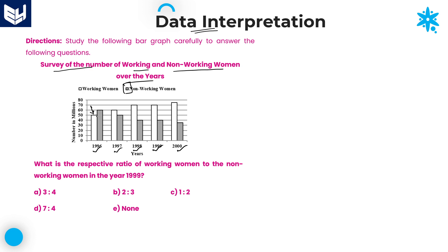If you observe carefully, the values are not provided but a scale is given. If the value is in between the scale, then we can consider it as the midpoint. For example, in the year 2000, working women is in between 70 and 80, so you can take it as 75. Whereas non-working women is in between 30 and 40, which is equal to 35. In that way, we need to consider.